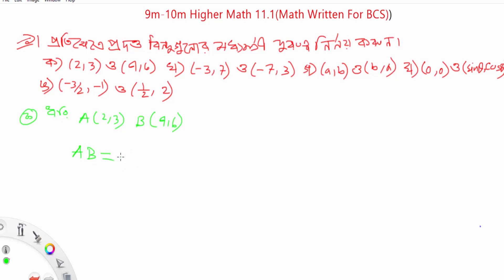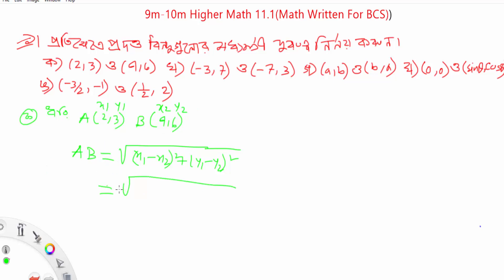The distance formula is: square root of (x1 minus x2) squared plus (y1 minus y2) squared. Substituting: x1 is 2, x2 is 4, so (2 minus 4); and y1 is 3, y2 is 6, so (3 minus 6) the whole square plus.